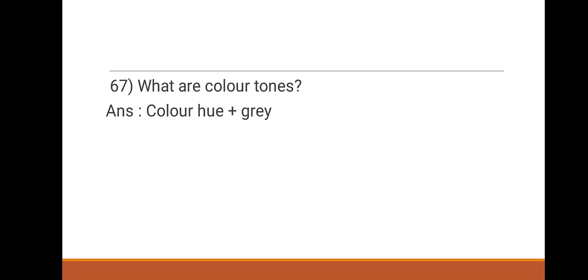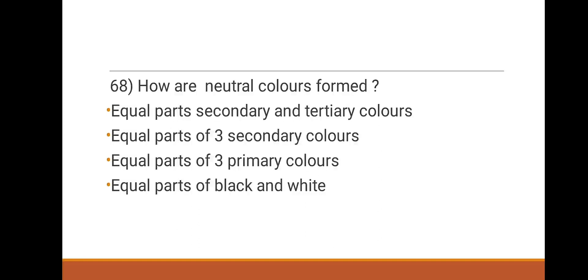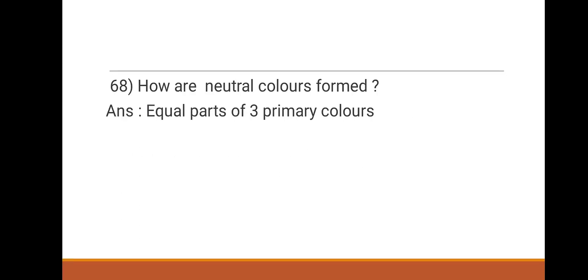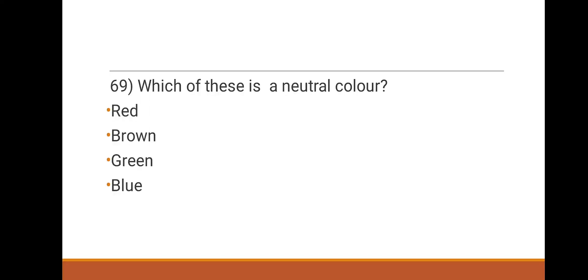Next question: what are neutral colors and how are they formed? Options include equal parts of three primary colors, equal parts of three secondary colors, equal parts of black and white. The right answer is equal parts of three primary colors.